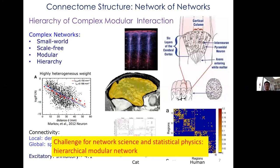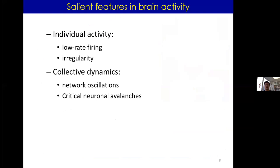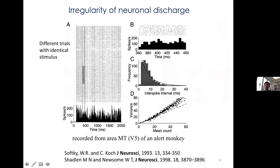At the single neuron level, firing is very low-rate and irregular. At the circuit level, you have collective non-trivial dynamical features. About twenty years ago, experiments placed electrodes into animal brains during visual processing. Measuring spiking across many trials, you see the average firing rate change with the input signal, but single-neuron spiking is very irregular — the interspike interval resembles a random Poisson process.